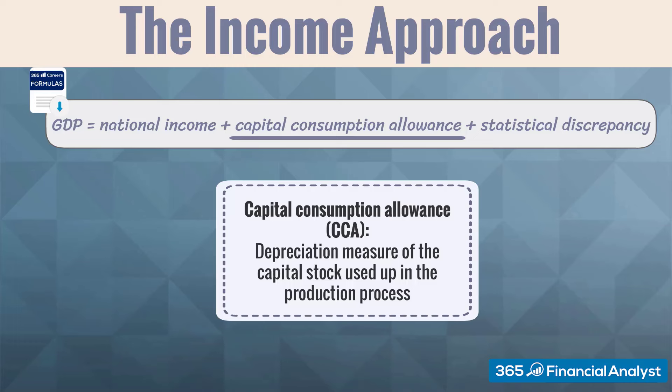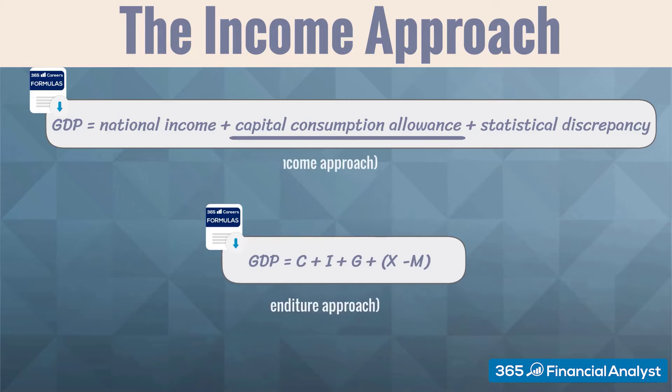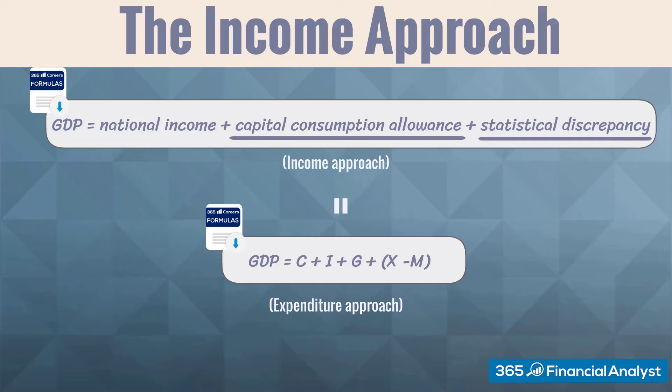Usually, there is a difference in GDP when measured with the expenditure approach and with the income approach, although theoretically results are supposed to be the same. Each of the methods uses a lot of information gathered from different resources, and matching exactly the GDP results obtained under the two approaches is almost impossible. For this reason, when using the income approach, a statistical discrepancy is added to the equation to adjust for any differences.